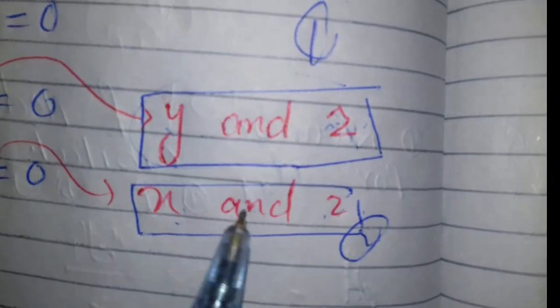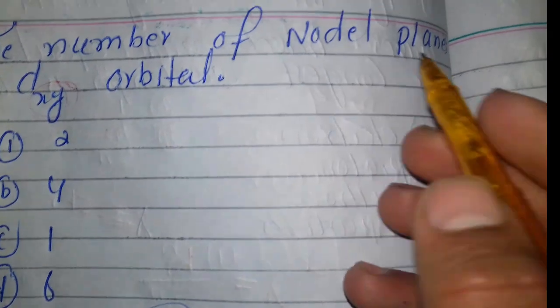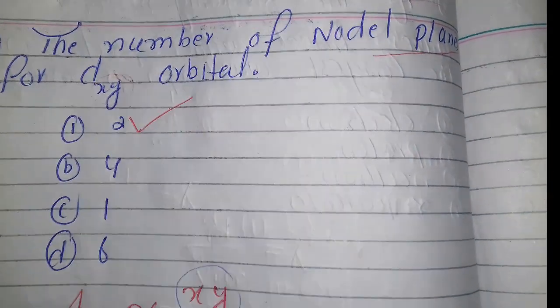For d_xy, the electron density is zero, meaning there are two nodal planes. Thank you for watching.